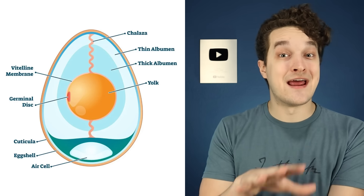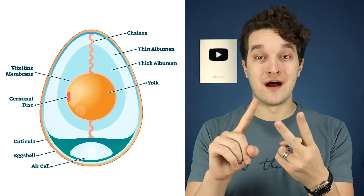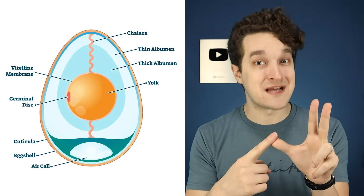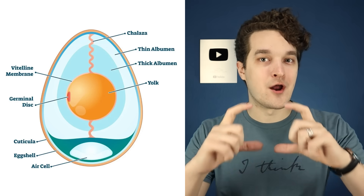Consider, for example, an egg. An egg contains an embryo, a yolk to feed it, albumin to hydrate it, and a hard outer shell to protect it. The whole point of an egg is to house and nourish a developing embryo in the most efficient and self-contained way possible. Seeds are like plant eggs.